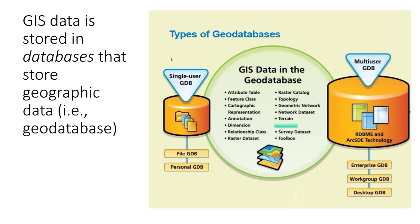GIS data is stored in databases that store geographic data. We call this a geodatabase, at least in the ArcGIS world. Within this geodatabase we can store attribute tables, feature classes, cartographic representations, annotation, and a variety of other things. Databases are designed to organize information, and we can have geographic databases oriented around spatial or geographic data, or conventional databases like one that might store student information for Shasta College. There's a distinction between a single-user database and a multi-user database — in this course we'll deal much more with the single-user geodatabase.